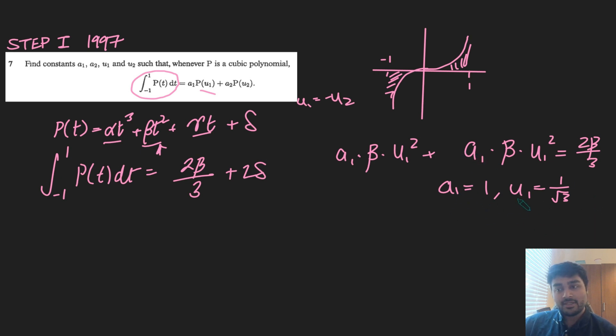So that's what I'm going to choose for a1. u1 is going to be 1 over root 3, and then a2 has to be 1, and u2 has to be the negative of this.